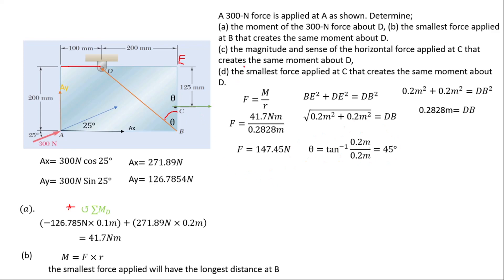For part (c), we need the magnitude and sense of the horizontal force applied at C that creates the same moment. The horizontal force acts with a perpendicular distance of 0.125 meters. Using Force = Moment / perpendicular distance: F = 41.7 / 0.125 = 333.6 newtons.